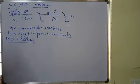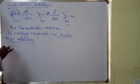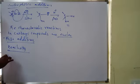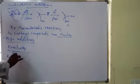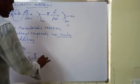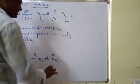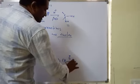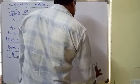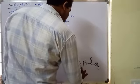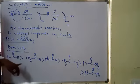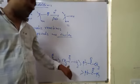Looking at the reactivity of carbonyl compounds: formaldehyde is more reactive than acetaldehyde, which is more reactive than benzaldehyde, then acetone, then acetophenone, then benzophenone. So formaldehyde is the most reactive.